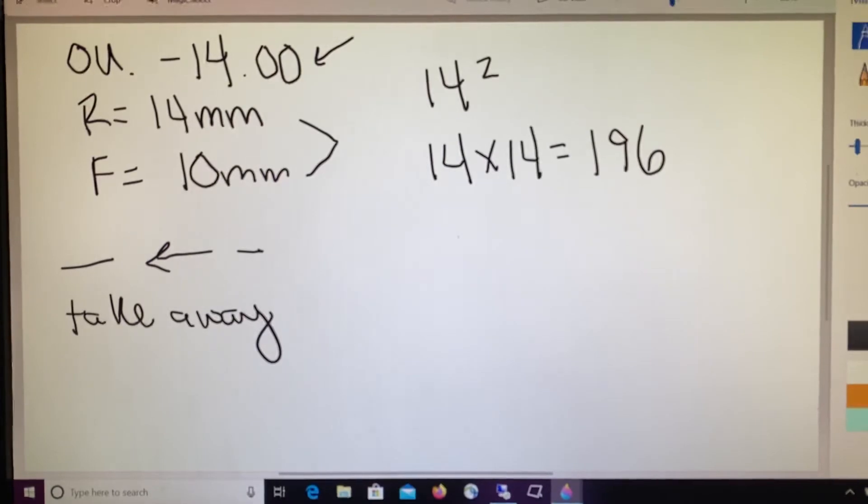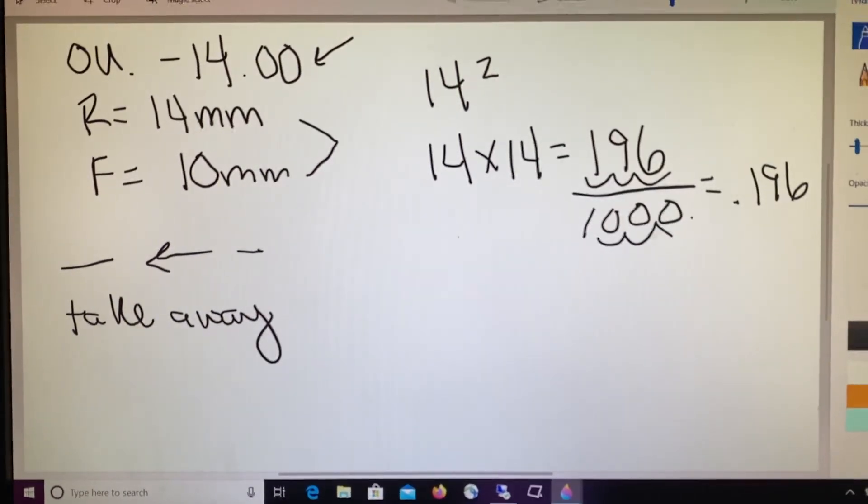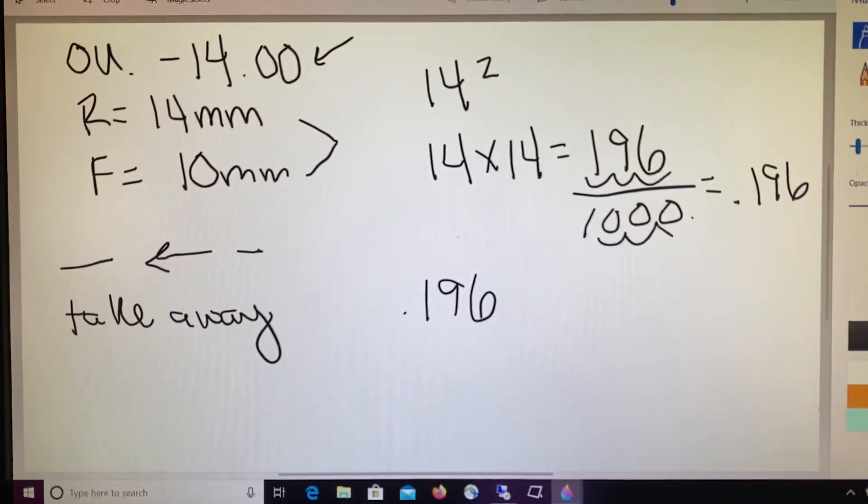The next step is to divide that number by 1000, and when we do that, we end up with 0.196. We're just moving the decimal three spots to the left.